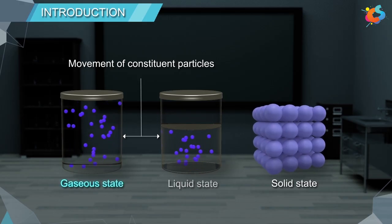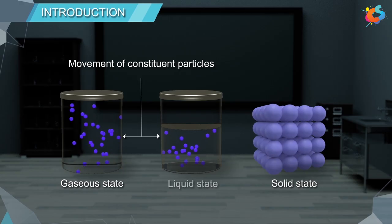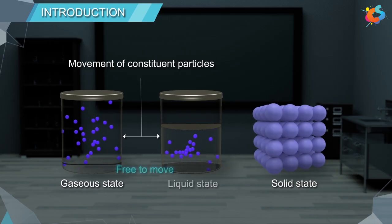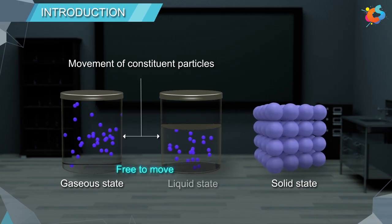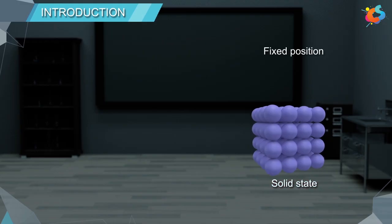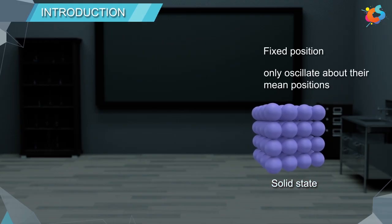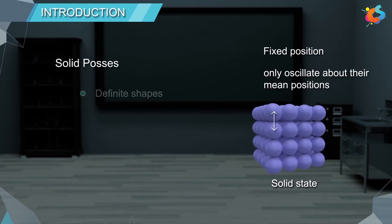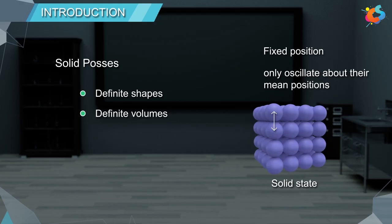The reason for fluidity of liquids and gases is due to the movement of constituent particles. In gaseous state and liquid state, the constituent particles are free to move about. Whereas in solids, the constituent particles have fixed positions and can only oscillate about their mean positions, and hence they possess definite shapes and volumes — which is nothing but rigidity.